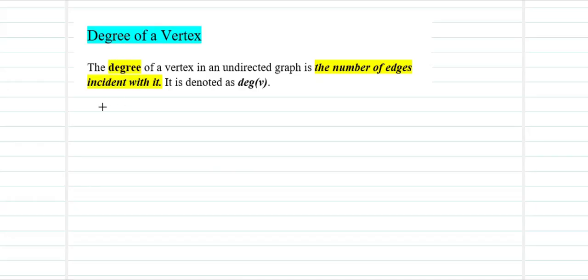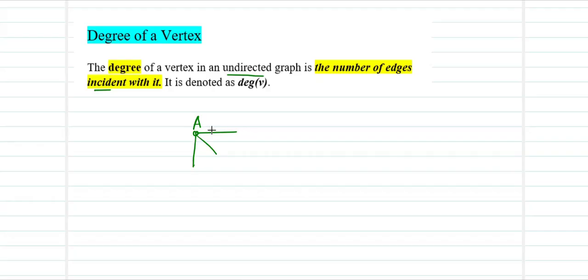The degree of a vertex of an undirected graph is the number of edges that is incident with it — meaning which is attached to it. This degree is denoted by DEG of V. Say we have a vertex A with three edges popping out of it: edge E1 is incident with A, edge E2 is incident with A, and edge E3 is incident with A. So the degree of vertex A is three.